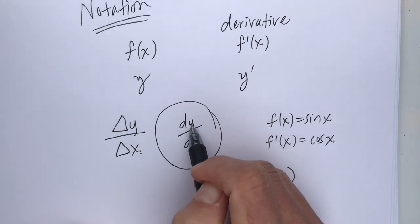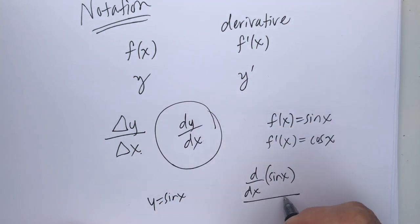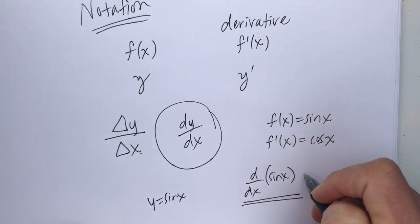So, there are y's referring to y equals sine x. This notation here, using the differential, to take the derivative of sine x, we would say this equals cosine x.